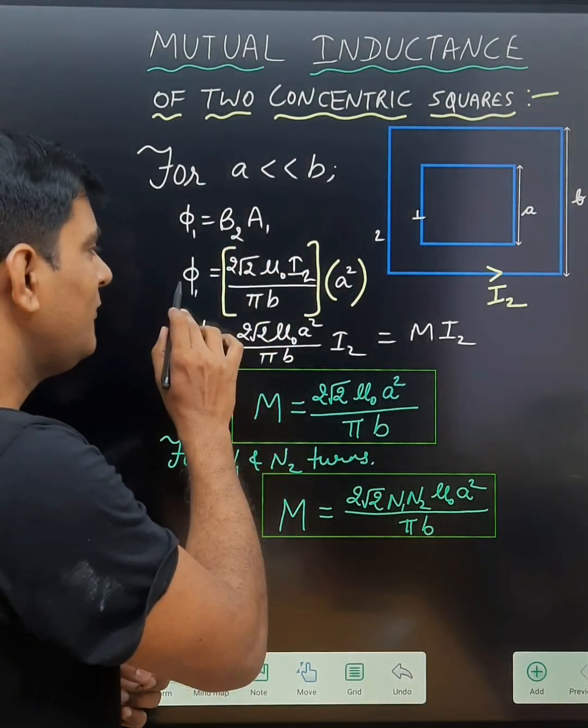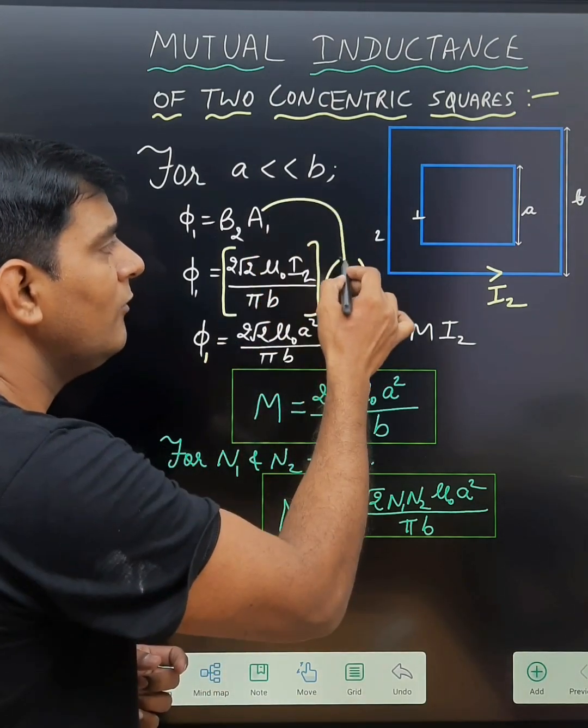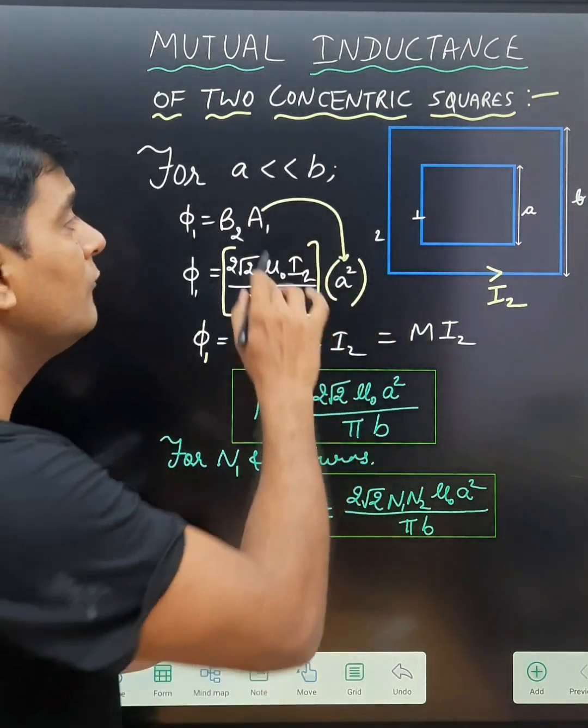Hence we can write φ1 equals 2√2 μ0 I2 upon π B, and the area will be A² for the first coil.